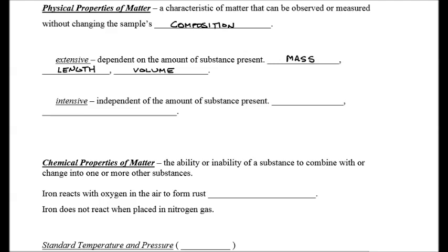But an intensive property is independent of the amount of substance present. Density is an intensive property. The density of aluminum is 2.7 grams per centimeter cubed. If you have an object and its density is 2.7 grams per centimeter cubed, it must be aluminum.